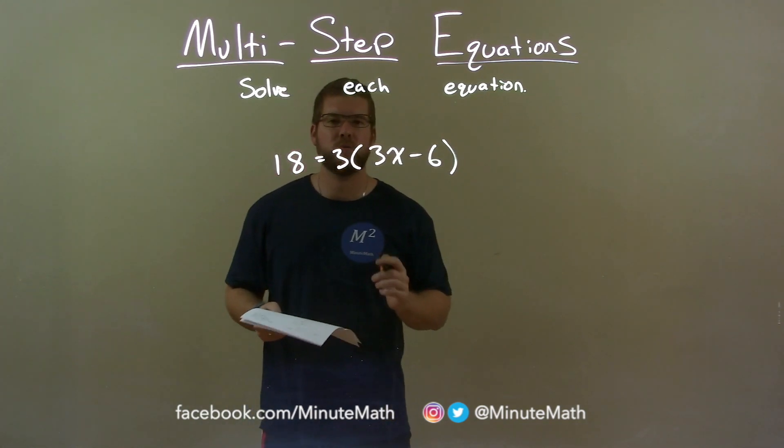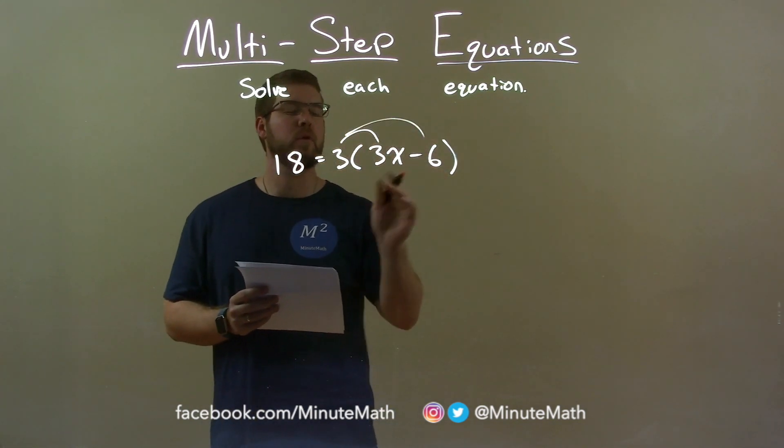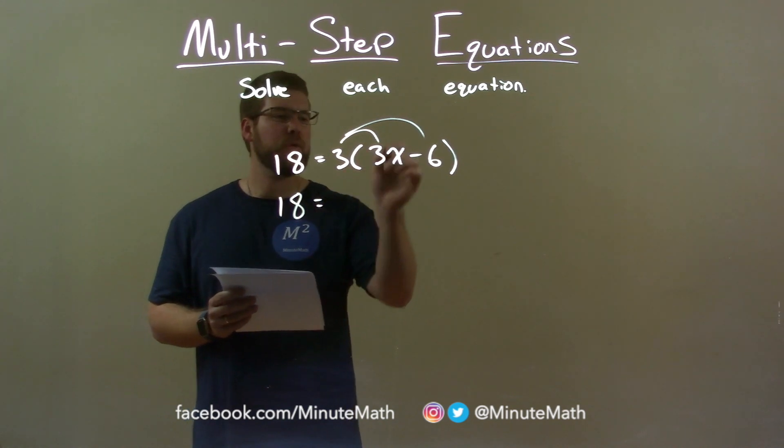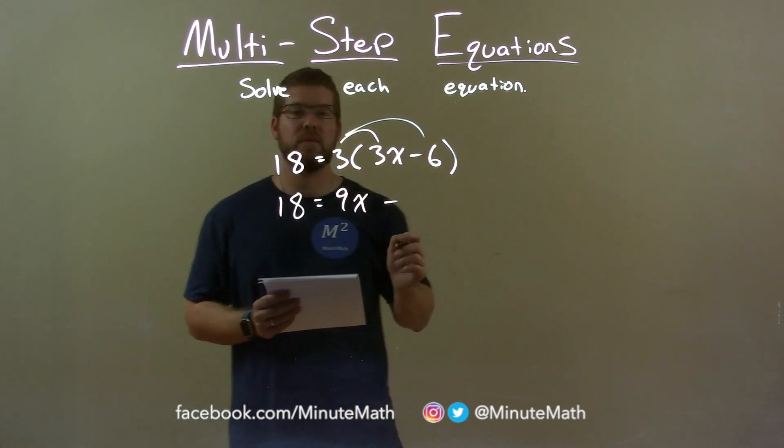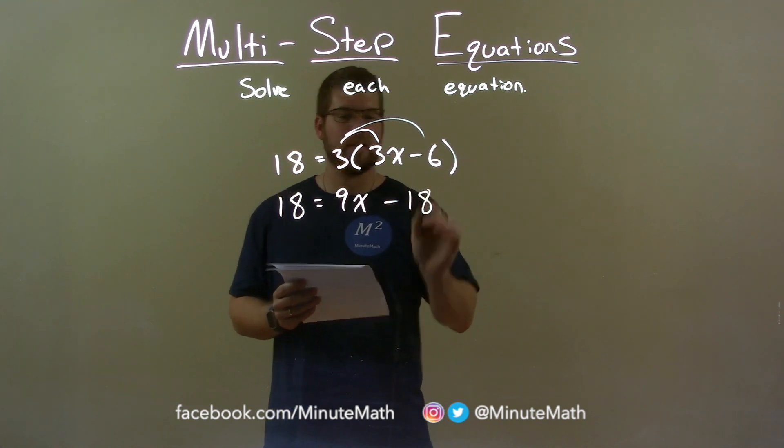What I want to do here is first distribute the 3 to both parts of that parentheses. 18 equals 3 times 3x is 9x, and then 3 times 6 is 18, so we're subtracting 18 here.